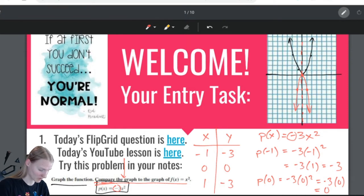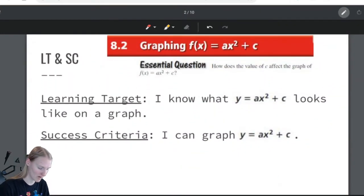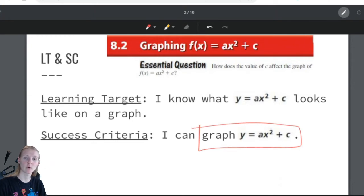Let's move on to what we have for today. Today, we move into 8.2. Our learning target: I know what y equals ax squared plus c. So, yesterday, or excuse me, last lesson we learned about ax squared. Now, we tack on the plus c. You should know what this looks like on a graph, and you should be able to graph it yourself. So, that is what we're going to do today. We are going to graph y equals ax squared plus c.